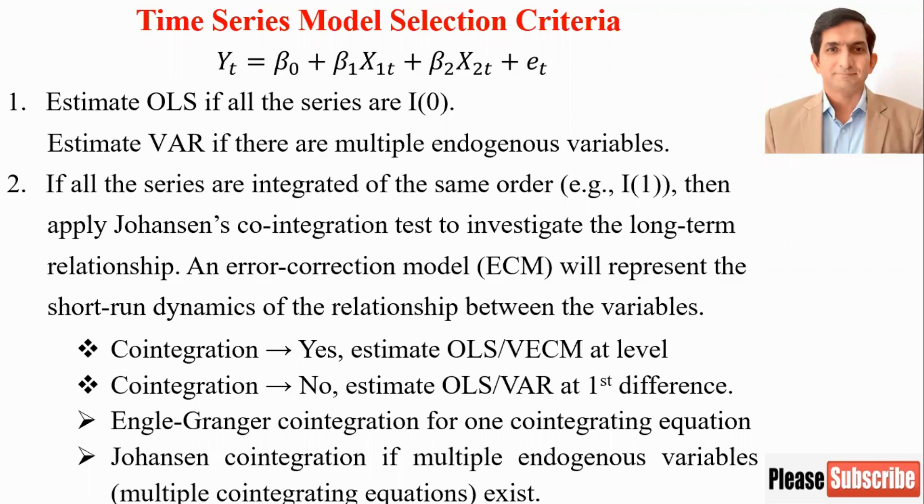Keep in mind there are two types of cointegration: one is Engle-Granger cointegration and the second is Johansen cointegration. Engle-Granger cointegration has a limitation—it is used only for one cointegrating equation. If you think there could be multiple cointegrating equations in your case, then go for Johansen cointegration.